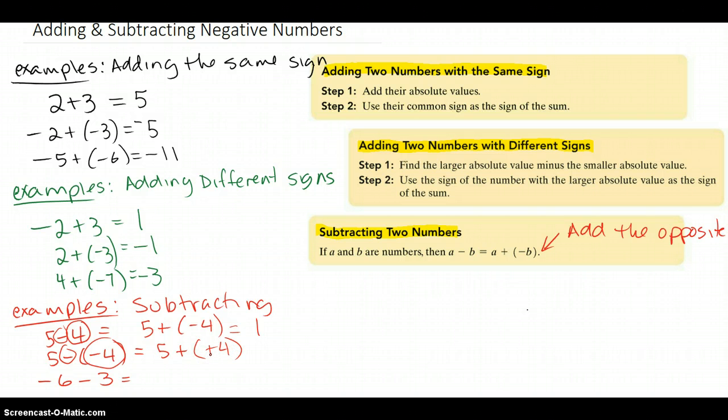And then the opposite of negative 4 is a positive 4. So subtracting a negative turns out to be adding a positive. So that answer is actually 9 and not 1.